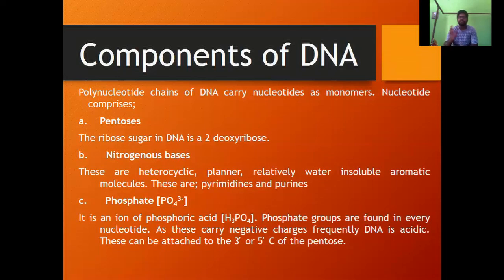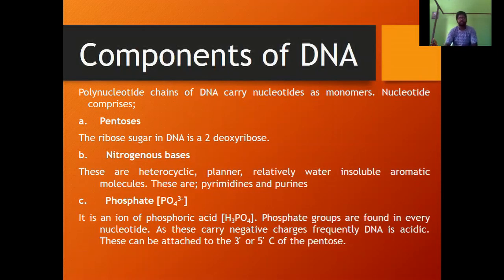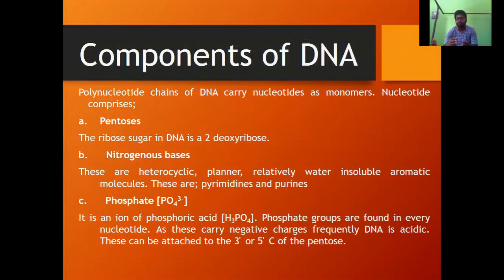The pentose sugar present in DNA is in deoxyribose form, which has a lack of an oxygen molecule at the 2-prime carbon. The nitrogenous bases are heterocyclic, planar, and relatively water-insoluble aromatic molecules — these are pyrimidines and purines. The phosphate is an ion of phosphoric acid (H₃PO₄), present in ionic form, which gives a negative charge to the DNA molecule. Phosphate groups are found in every nucleotide and can be attached to the 3-prime or 5-prime carbon of the pentose sugar.